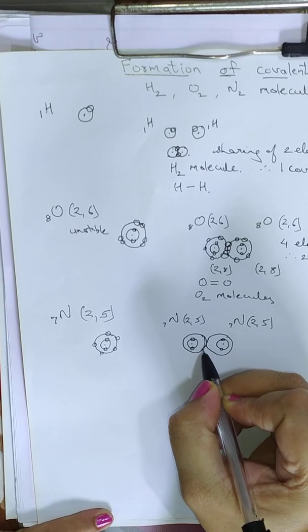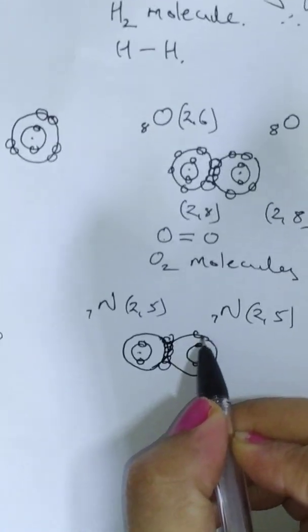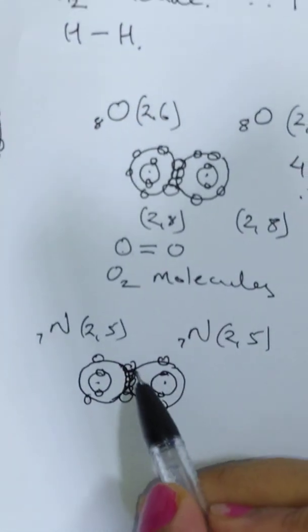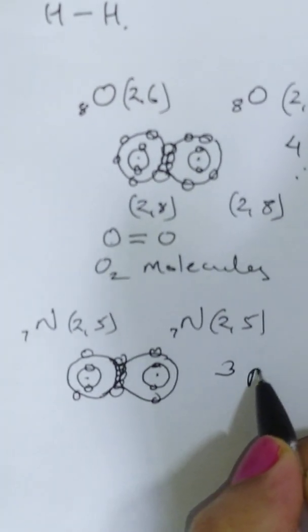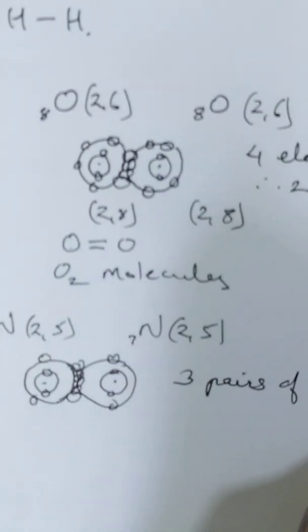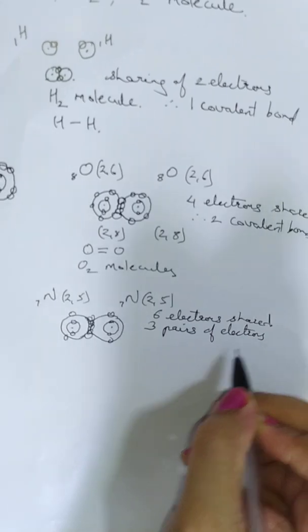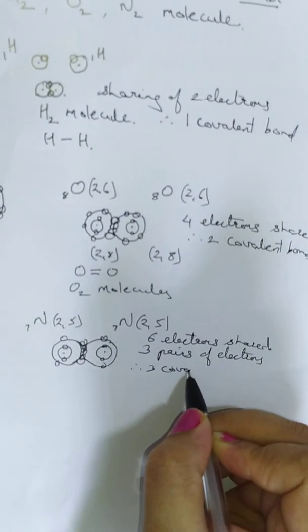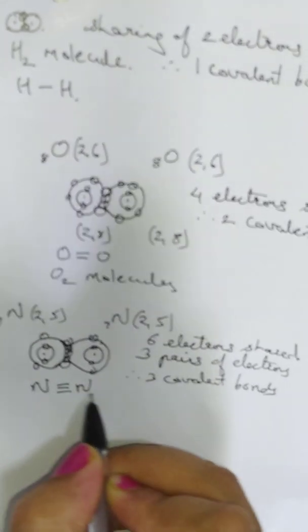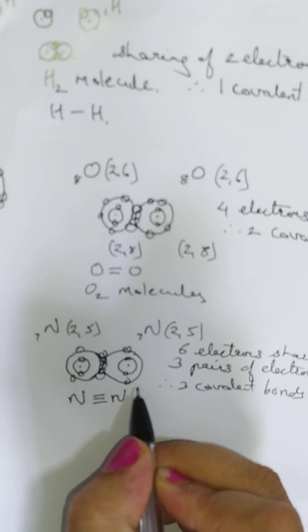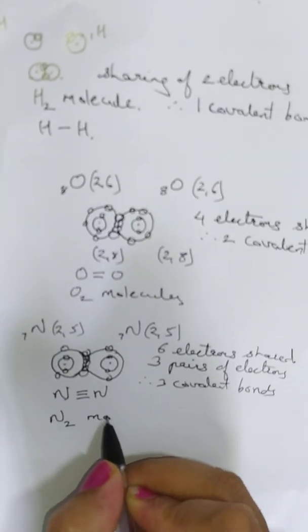They combine and share the electrons together. They have combined 3 pairs of electrons — that is, 6 electrons are shared, meaning 3 pairs of electrons are shared. Therefore, 3 covalent bonds are formed. Nitrogen and nitrogen combine by sharing 6 electrons — that is, 3 pairs of electrons. By sharing 3 pairs of electrons, a triple covalent bond is formed and the nitrogen molecule N2 is formed.